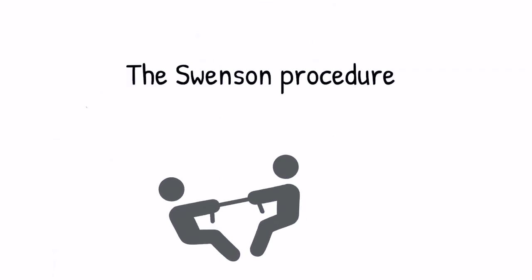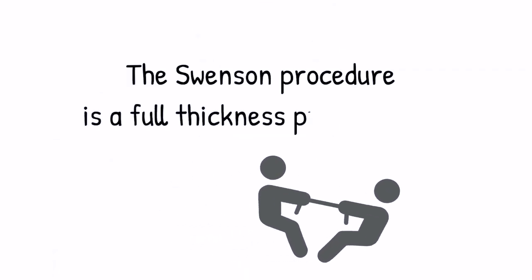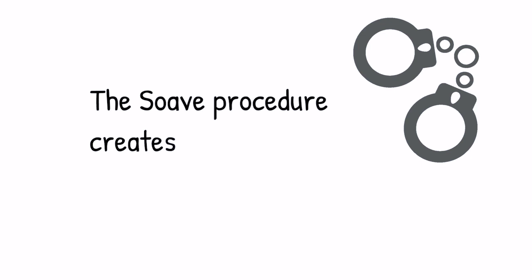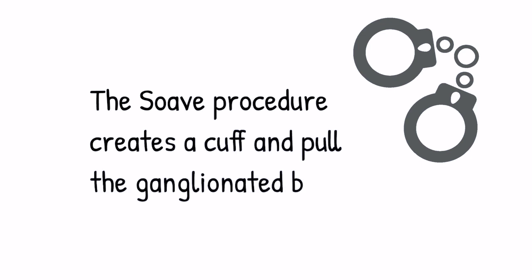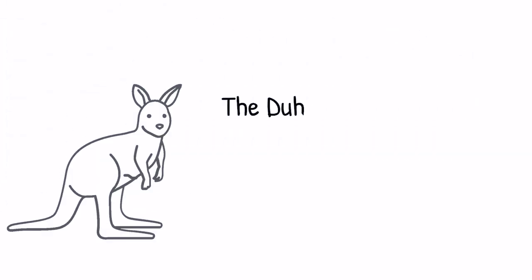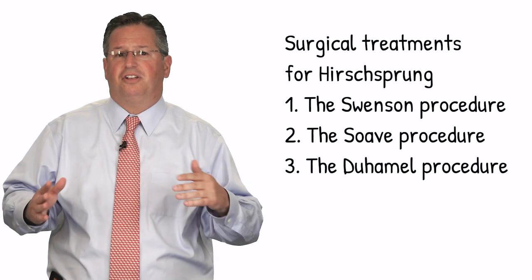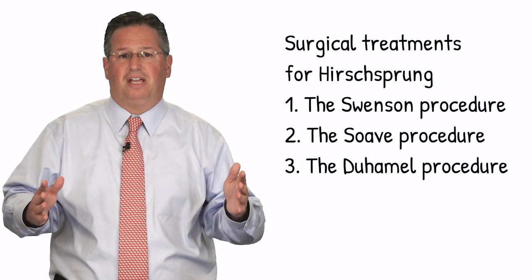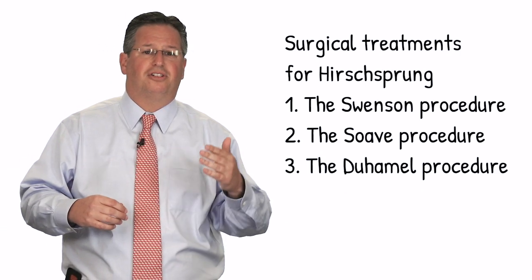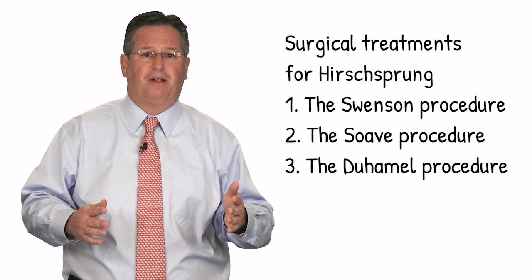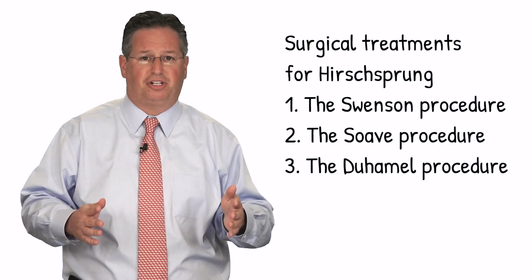The Swenson Procedure is a full thickness pull through. The Suave Procedure creates a cuff and pulls the ganglionated bowel between that cuff. And finally, the Duhamel Procedure creates a pouch for the pull through procedure. These three procedures all achieve the same goal, and it is really dependent on your surgeon's comfort level which is the right procedure for your child.